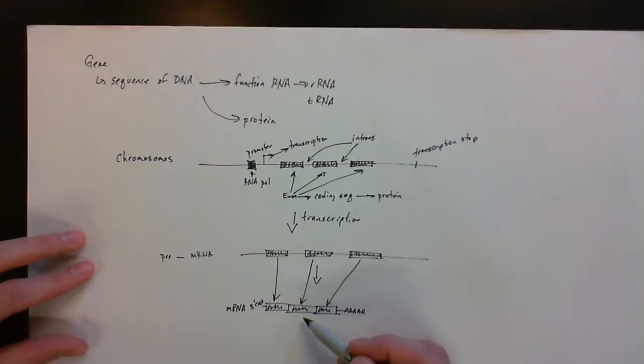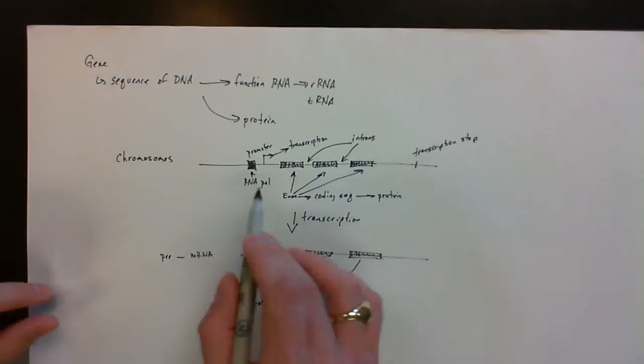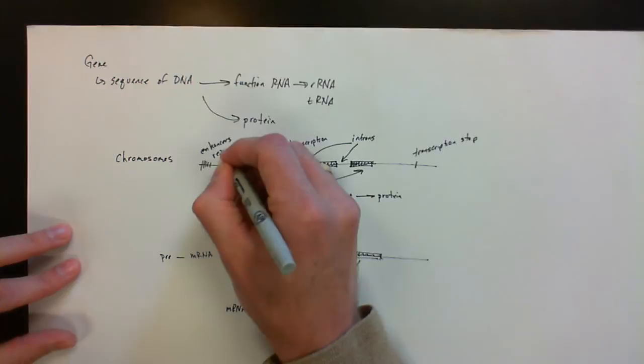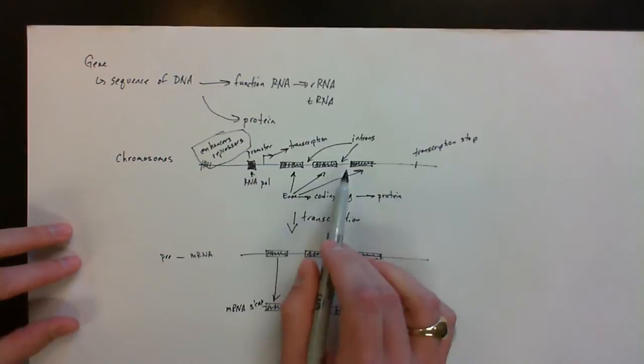So if we expand upon that, there's going to be other things that are going to be involved in the control of these genes, and these are little what we call enhancers or repressors. The reason these are important is the concept that these genes have to be controlled. There's got to be things that regulate when they get turned on and when they get turned off.